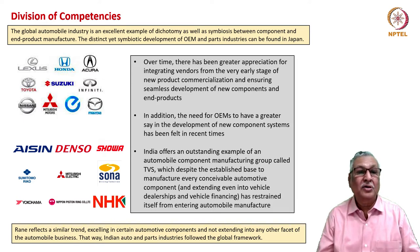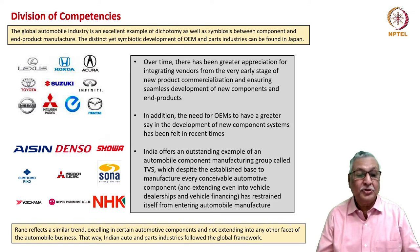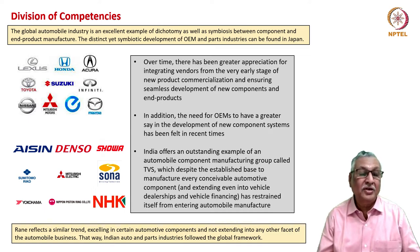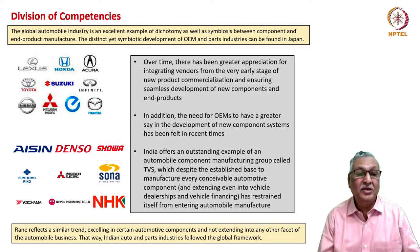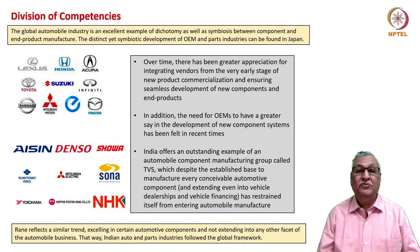You can see through this graphic the division of competencies in the global automobile industry between OEMs and component makers. Lexus, Honda, Acura, Suzuki, Infiniti, Nissan, Mitsubishi and Mazda are OEMs that do not manufacture their components. In contrast, Aishin, Denso, Showa, Sumitomo, Yokohama, Nippon Piston Ring Company, NHK Spring Company are all component makers that do not manufacture any end products. Over time, people have understood the need for integrating vendor development from the very start of product development. Whenever a new product is taken up, vendors are taken into confidence and asked whether they have new-generation components that can help develop new-generation products.